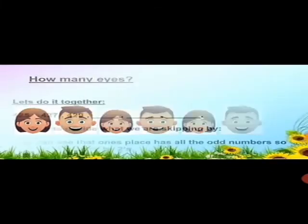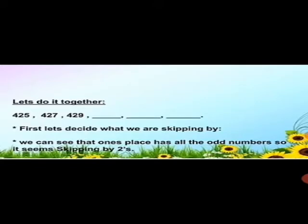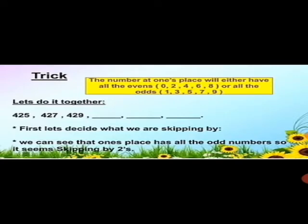Now we have an example with bigger values. How do we solve it quickly since we are doing mental maths? For this we have a trick. The trick is that the digit in the ones place will either follow all even numbers or all odd numbers. As you know, even numbers are those divisible by 2 — like 0, 2, 4, 6, 8. You also learned about odd numbers.